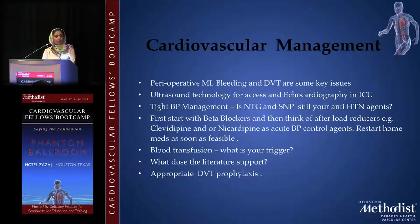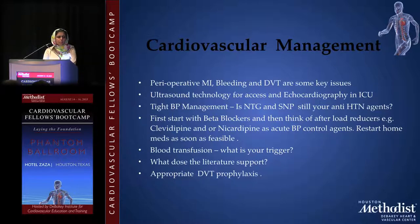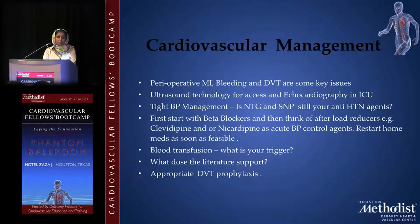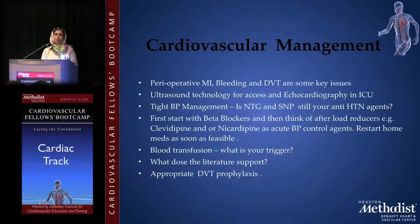If the patient is hypertensive, beta blockers are your first choice, depending on whether the patient is not on inotropes or not bradycardic. Other considerations are afterload reducers like nicardipine. We do use nitroglycerin in our patients — it may not be the first choice, but it can be used as an antihypertensive. If the patient is stable and can take PO, restart oral medications when feasible.